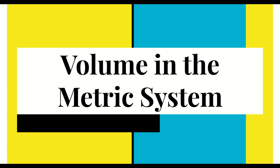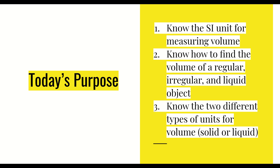We're going to have our video notes on volume in the metric system, so write the title at the top of your page: 'Volume in the Metric System.' We have three purposes today: first, know the SI unit for measuring volume; second, know how to find the volume of a regular, irregular, and liquid object; and third, know the two different types of units for volume. The first and third purposes pair together, because there are two different SI units — one for liquid and one for a solid.